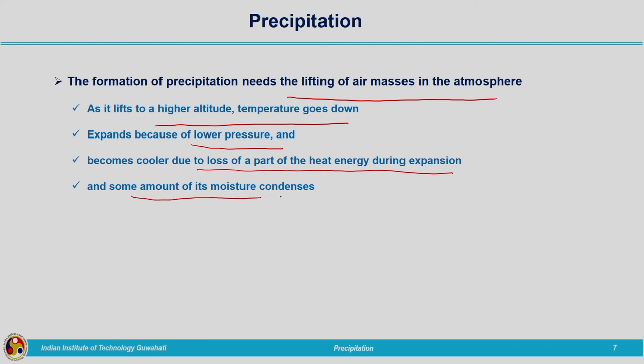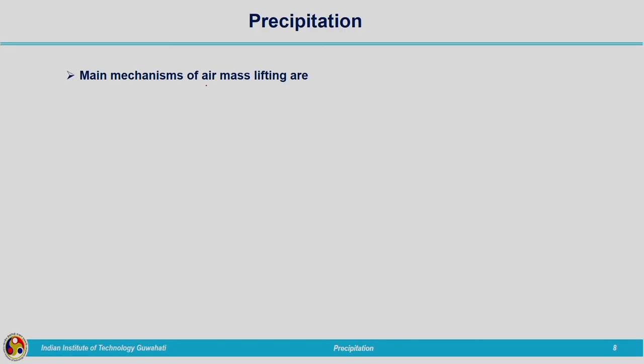At that time some of its moisture condenses — water vapour is converted to liquid form, and depending on the temperature it may be converted to ice crystals also. Now we need to understand how this lifting takes place. The main mechanisms of air mass lifting are frontal lifting, orographic lifting, and convective lifting. Based on these types of lifting, we call the particular precipitation frontal precipitation, orographic precipitation, and convective precipitation.